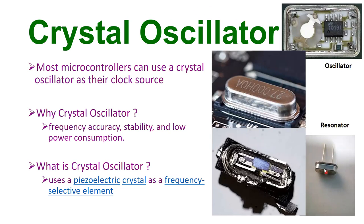You can see here this is a resonator, which is a two-pin device. It comes in this form and also in this form. Together with an integrated circuit, they form an oscillator circuit that can produce a sinusoidal waveform, which becomes a clock to your microcontroller board. You can see here this is an external can on the crystal oscillator.